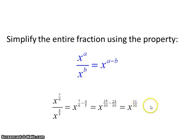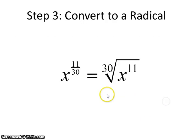But we remember our original problem asked us to express our answer as a single root. So we just have to convert this back to root form which is easy enough. The denominator is our root number. The numerator is our exponent for x. So our answer is the thirtieth root of x to the eleventh.